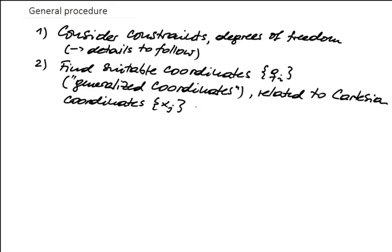The generalized coordinates Q_i will be related to the Cartesian coordinates X_J via some transformation law: X_J is some function of the new coordinates Q_i. Possibly this relationship may also be time dependent. You may think of a rotating frame, for example, where the new coordinates are related to the Cartesian coordinates in the rest frame via a time-dependent transformation because the frame rotates. So you can have an arbitrary transformation law, and it may depend on time.